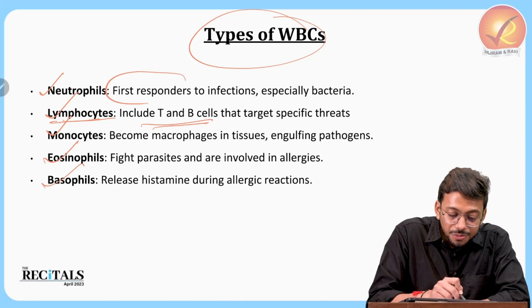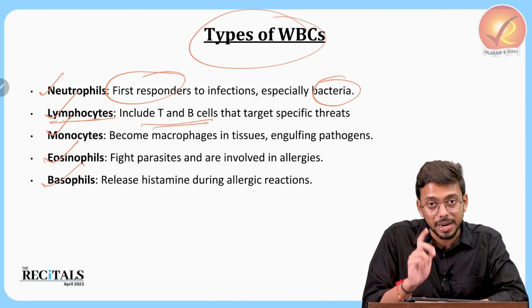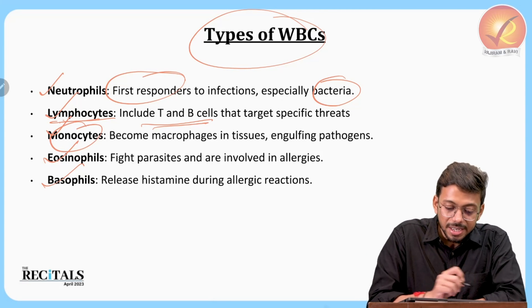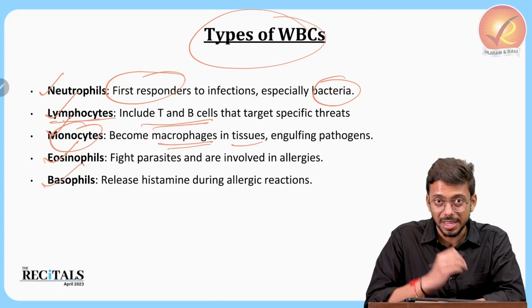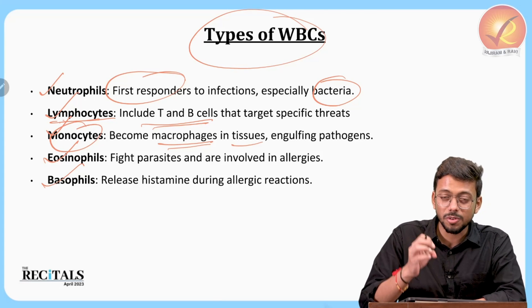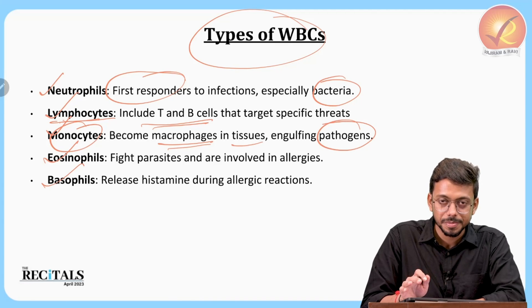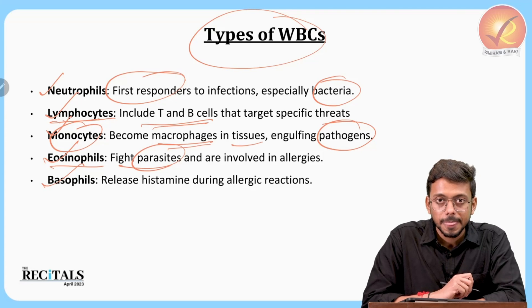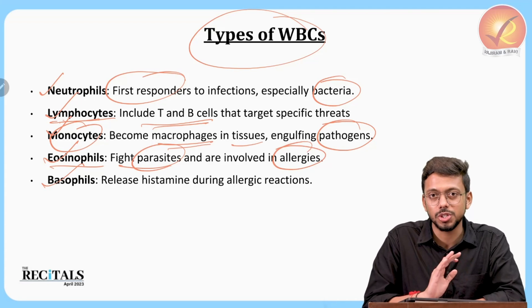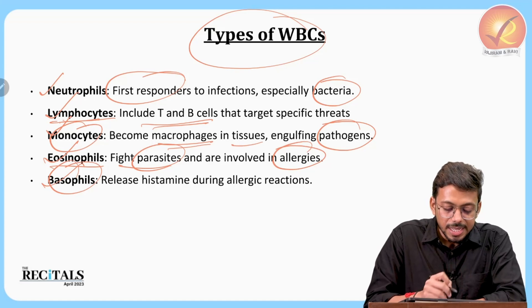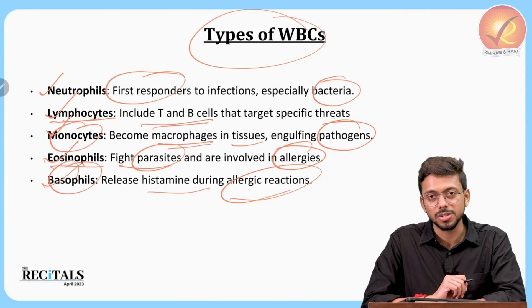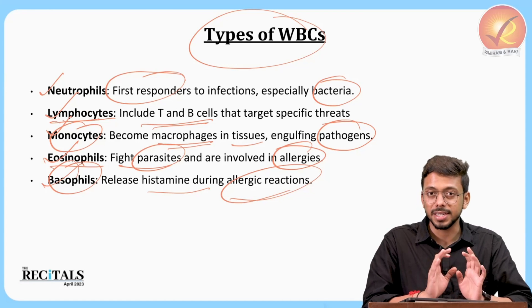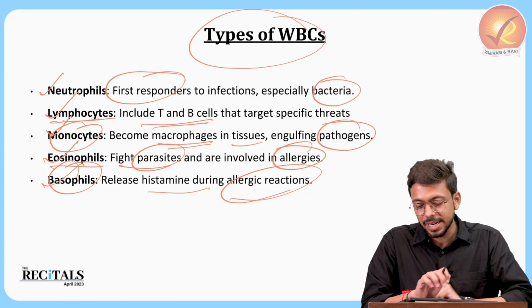Neutrophils are the first responders, especially against bacteria. Monocytes become macrophages in the tissue — they engulf and destroy pathogens. Eosinophils fight parasites and are involved in allergies. Basophils release histamine during allergic reactions. All these different types of white blood cells have their own characteristics and functions within the human body.